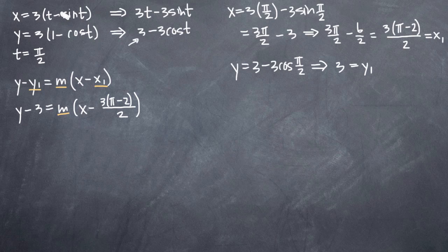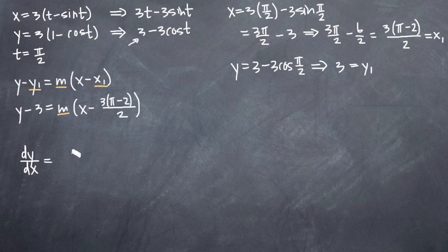We have two equations for our parametric curve, so we're going to need a formula to take the derivative of both equations at once. The derivative dy over dx will be equal to the derivative of our equation for y with respect to t, divided by the derivative of our equation for x with respect to t.